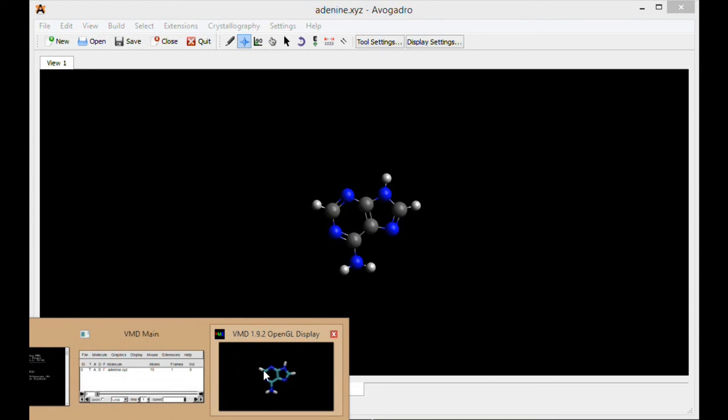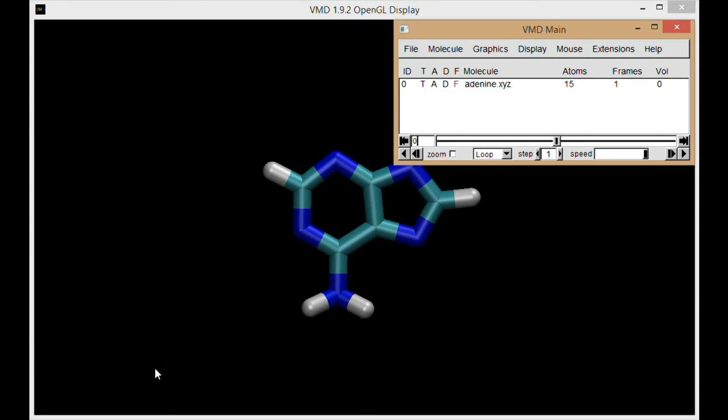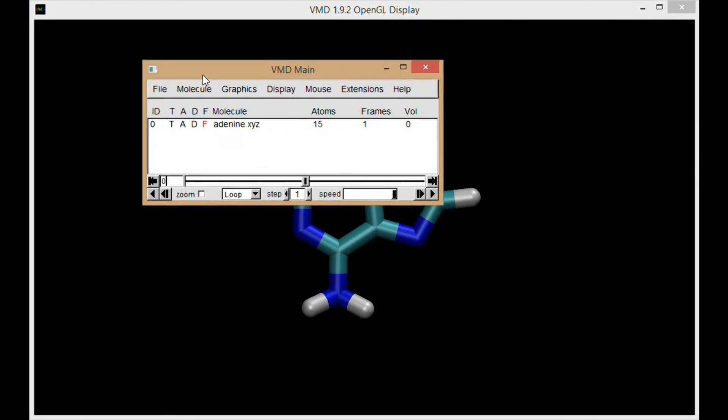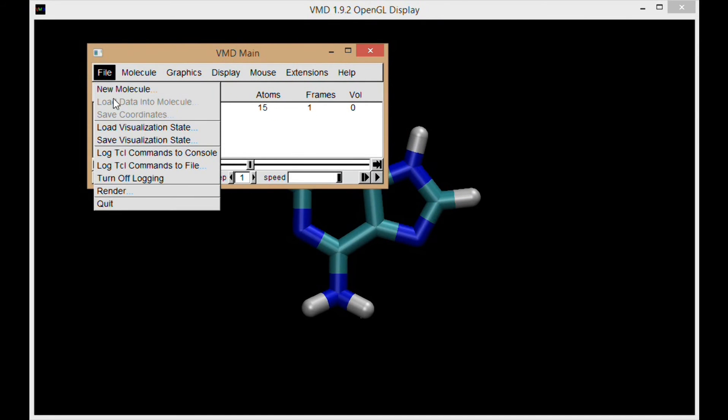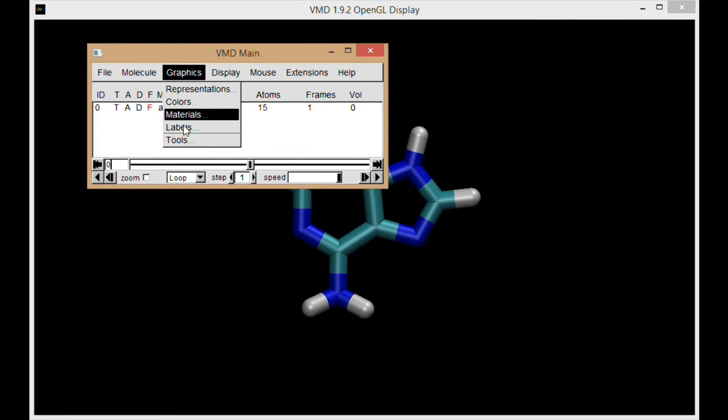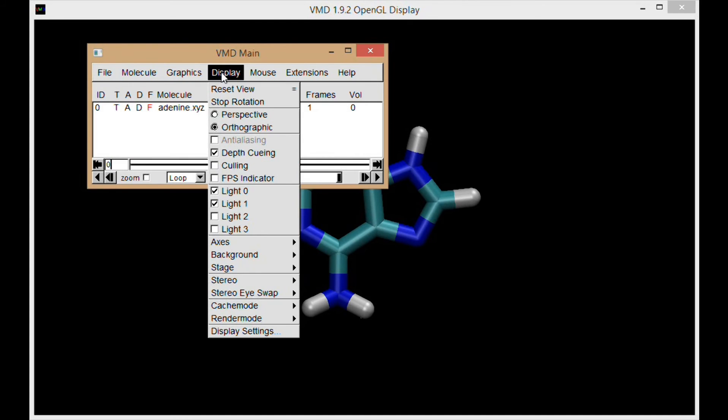And similarly, VMD. VMD typically has three windows. So there's the OpenGL display, the molecular display window. And then there's the main menu where I can do things like load files and change things about the graphics or various things about the display.